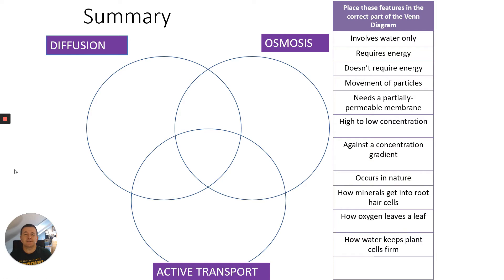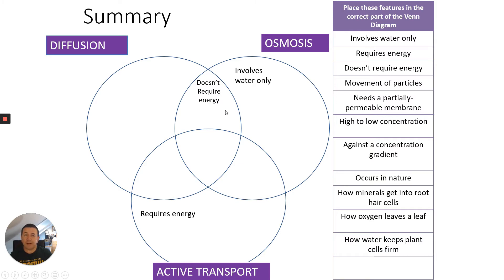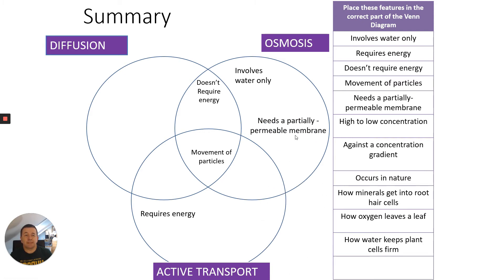Let's go through the answers. 'Involves water only' — that would be osmosis. 'Requires energy' — that's active transport, it requires energy from respiration. 'Doesn't require energy' — that's both diffusion and osmosis, a form of what we call passive transport. 'Movement of particles' — that would be all three, because all three involve movement of particles, whether it be oxygen, carbon dioxide, water in osmosis, or glucose in active transport. 'Needs a partially permeable membrane' — that would be osmosis, also known as a semi-permeable membrane.